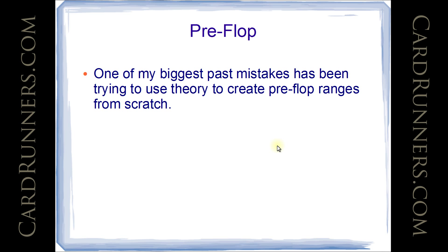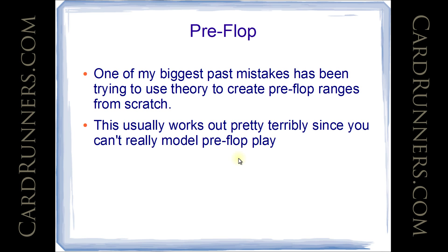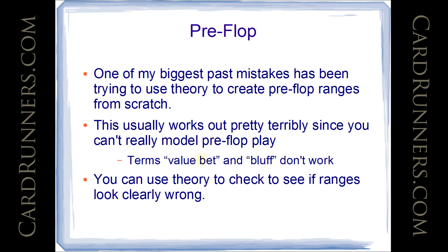One of my biggest past mistakes has been trying to use theory to create preflop ranges from scratch. This usually works out pretty terribly, since you can't really model preflop play — you'd make ranges a lot worse than the good players are currently using. Obviously, ranges now look completely different compared to 6 years ago, but using theory alone to make preflop ranges does not work out well. Most notably, the terms value bet and bluff don't really work preflop the way they do on other streets — they work best on the river, still pretty well on the turn and flop, but not well at all preflop. What you can do is use theory to check if ranges look clearly wrong, and to see if they look reasonable once you have a better sense of what you're looking for.